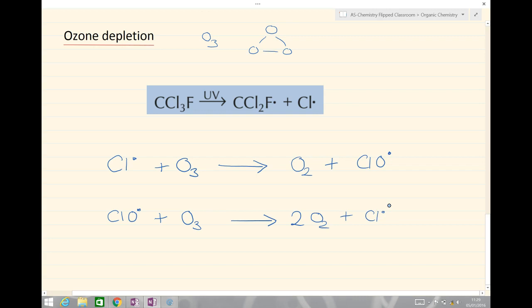What that means is that if we look, chlorine is regenerated at the end having been used in the middle. Here is an intermediate CLO dot and overall our reaction is two ozone going to make three oxygens removing the ozone and the chlorine is acting here as a catalyst. So we do not need very much of a chlorine radical to destroy a lot of the ozone.